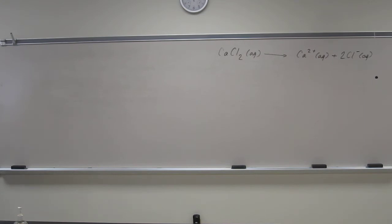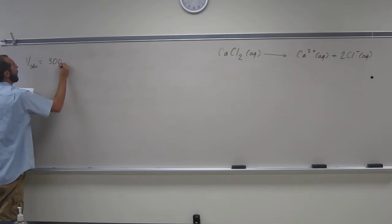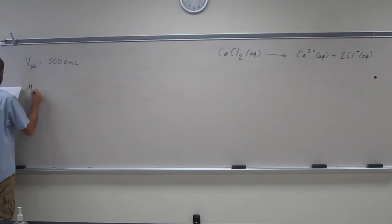Okay, so now we know the volume of the solution, calcium chloride, is 300 mL. And we know the molarity of it.